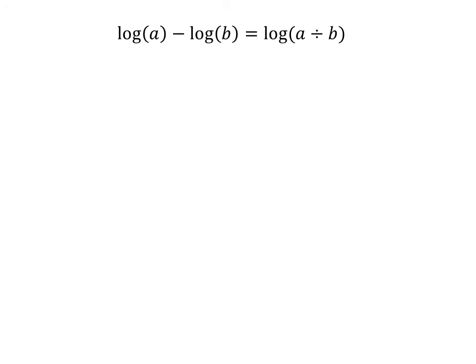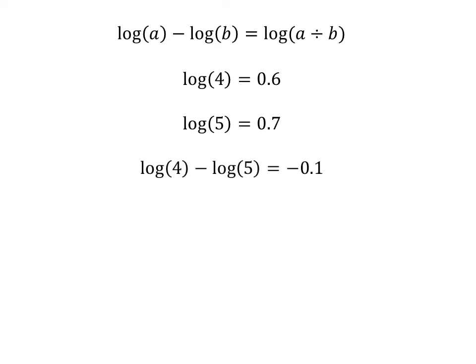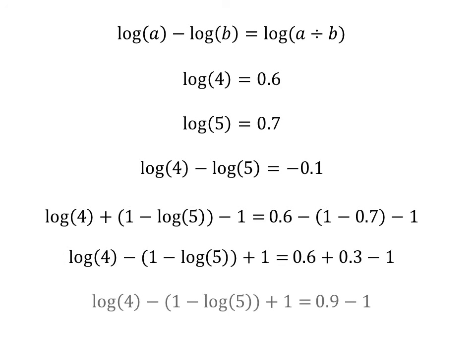You run into a similar problem when you divide a small number by a larger number — for example, dividing 4 by 5. The difference of the two logarithms is a negative number, which means the actual answer is going to be less than 1. Again, we add and subtract 1 to both sides of the equation and rearrange terms in order to find out how much less than 1 our final answer should be.